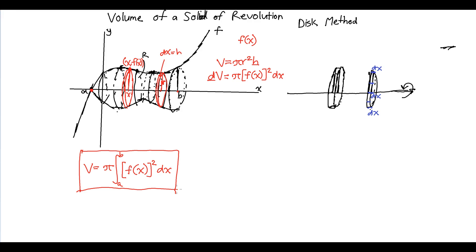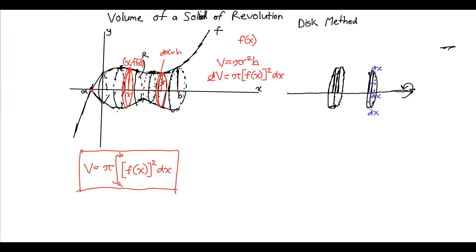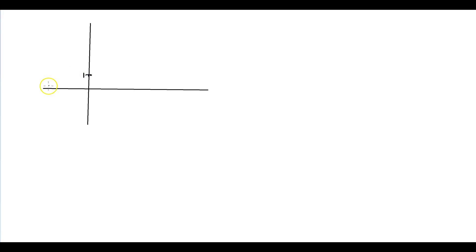So let's actually try an example. You have to visualize these solids, so I'll do drawings to help. Let's say we have the graph of e to the x — I'm doing e to the x because it's a pretty easy integral. So let's say we have the graph of e to the x and a region from 0 to 2, and you revolved this region around the x-axis.